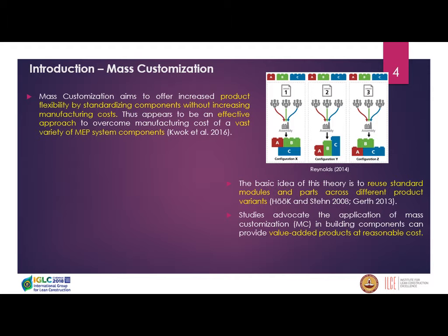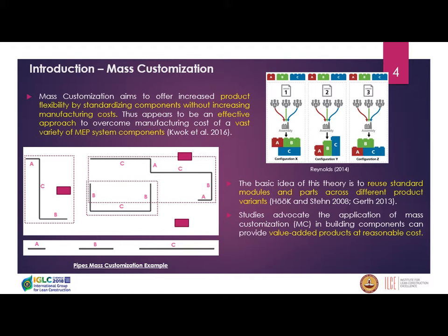We are trying to apply this strategy to MEP system design. For example, if a designer has designed a pipe layout for a plumbing system with many different pipes, we can optimize the design so that standardized modules A, B, C are used to form the pipe system layout. The basic idea of this research is to reuse standardized modules in order to produce different product variants.